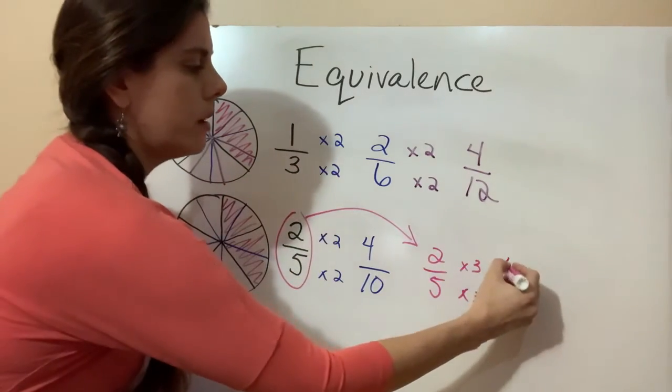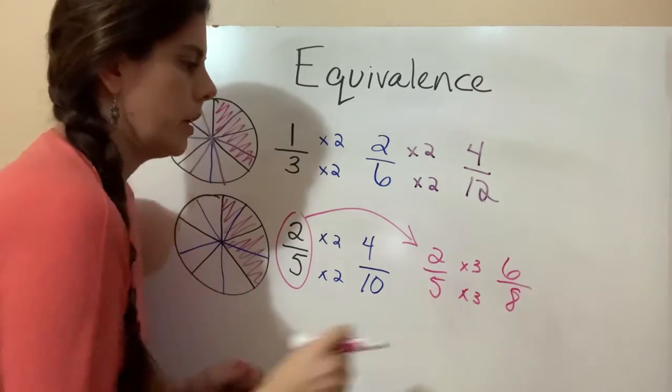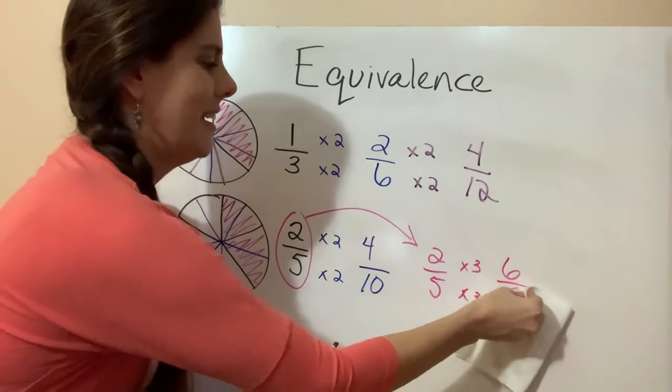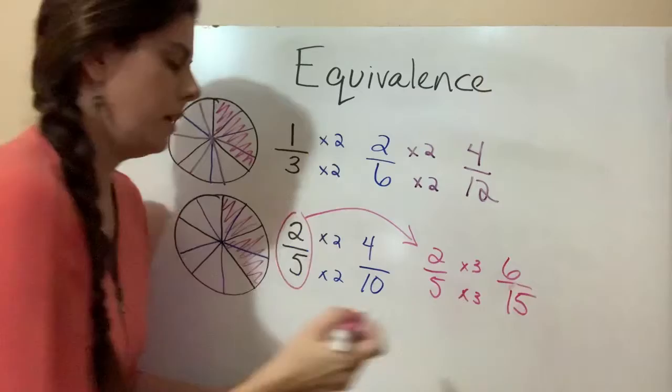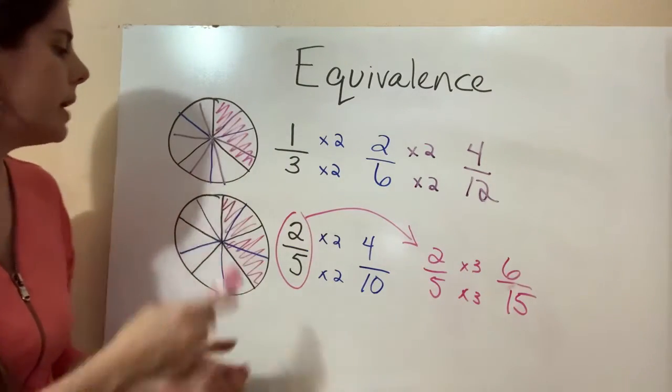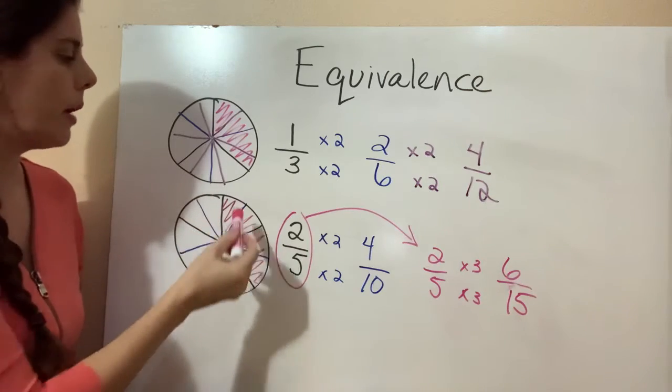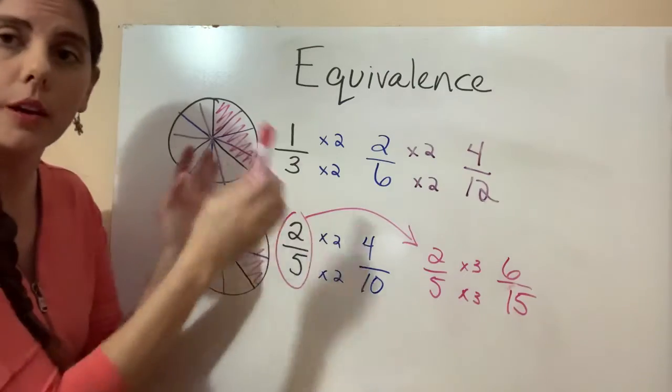So two times three equals six. Five times three equals fifteen. Let me erase that because I put eight. I did five plus three. Five times three is fifteen. So that would mean I would have to add in five more slices. And that would mean that I would have two more that would be colored in if I were to do that equivalently.